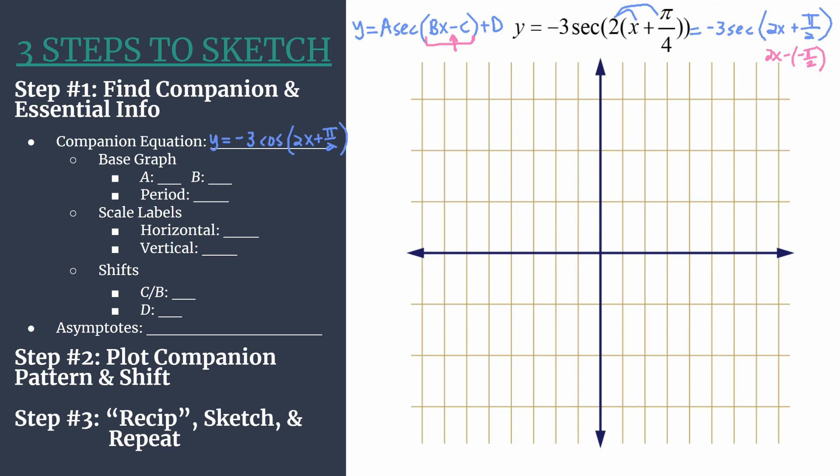Our base graph, this will make up the basis of our companion pattern in step 2. a is really important because it will help us find y values for the maximum and minimum of the cosine companion pattern. And it's just the leading coefficient, so negative 3. Because it's negative, that indicates we have a vertical reflection or a reflection over the x-axis. I like to put a star down by step 2, just so I recall that the cosine pattern is going to be that vertically flipped pattern.